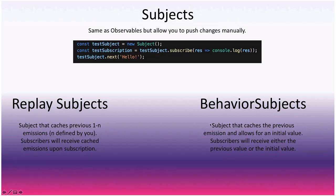Behavior subjects are the same as replay subjects except they only cache the most recent emission and allow for an initial value. When you subscribe, you receive either the initial value or the previous emission, depending on whether one has been emitted yet.